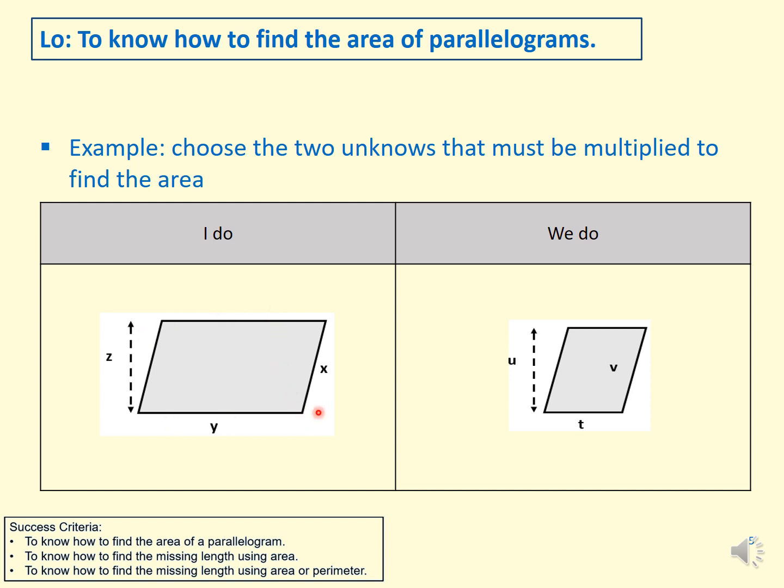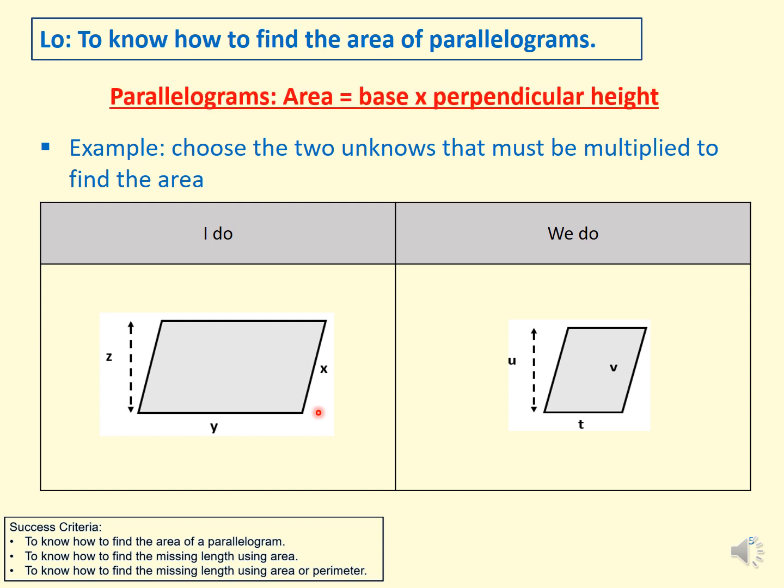As we said in previous videos, to find the area of a parallelogram or any shape you need to use the formula for the area of that shape. So let's see what the formula is. To find the area of a parallelogram you need to multiply base by perpendicular height. Let's look at what perpendicular height and base mean.